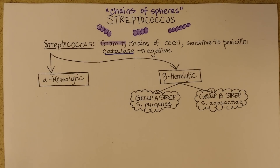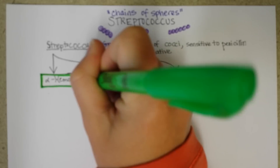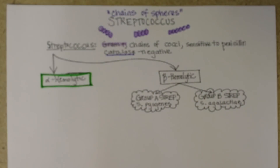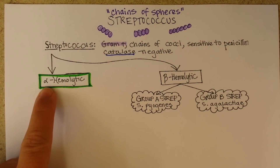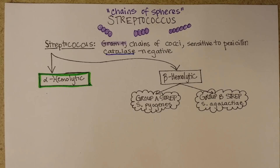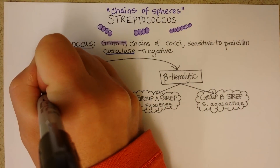We're going to split Streptococcus into two big groups based on their ability to damage red blood cells. We'll start with the ones that don't harm red blood cells, or perhaps only partially do — that's alpha hemolytic. Gamma hemolytic means they don't affect red blood cells at all; I tend to group them in as alpha hemolytic. We'll just say they definitely aren't beta hemolytic.